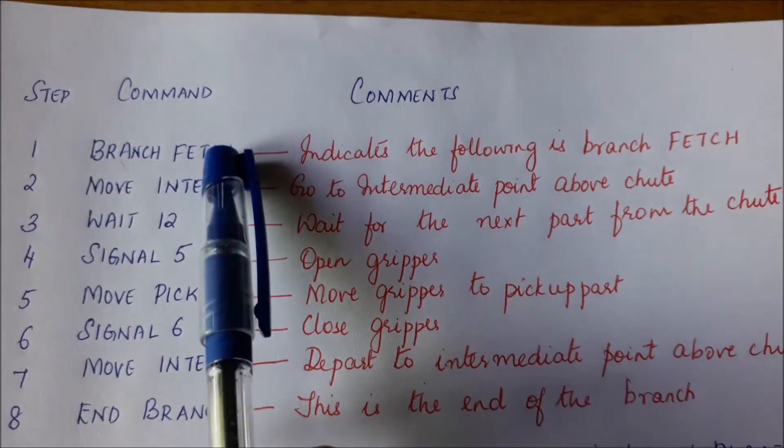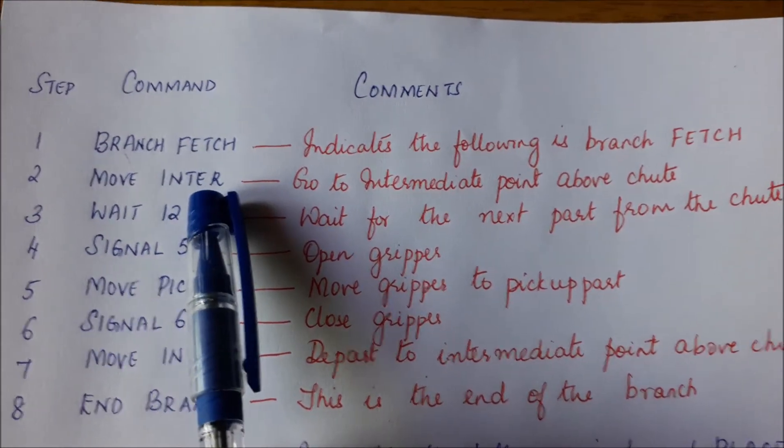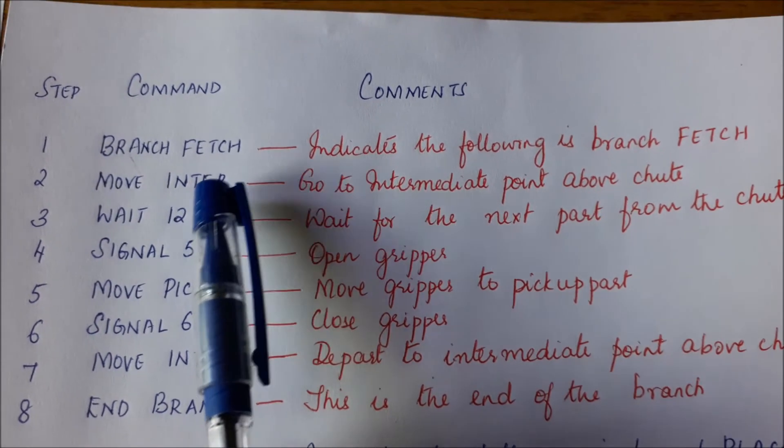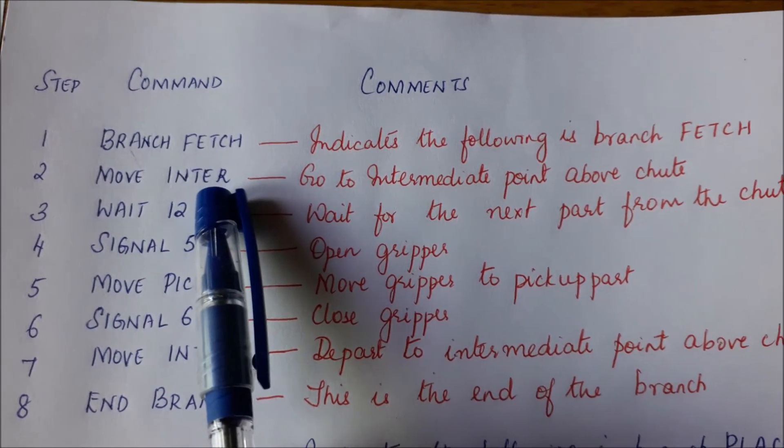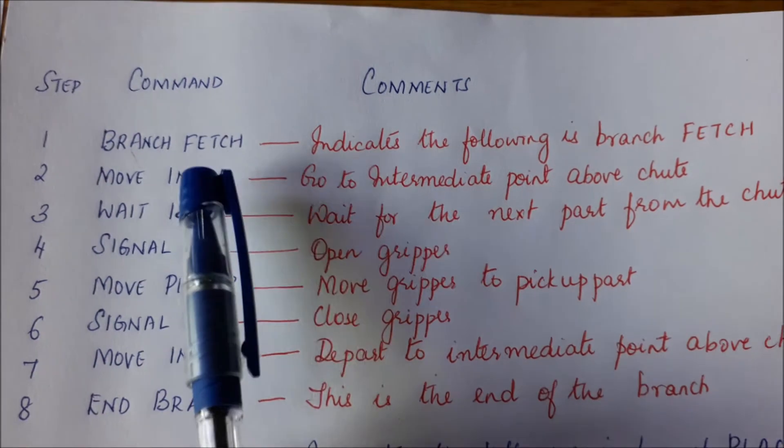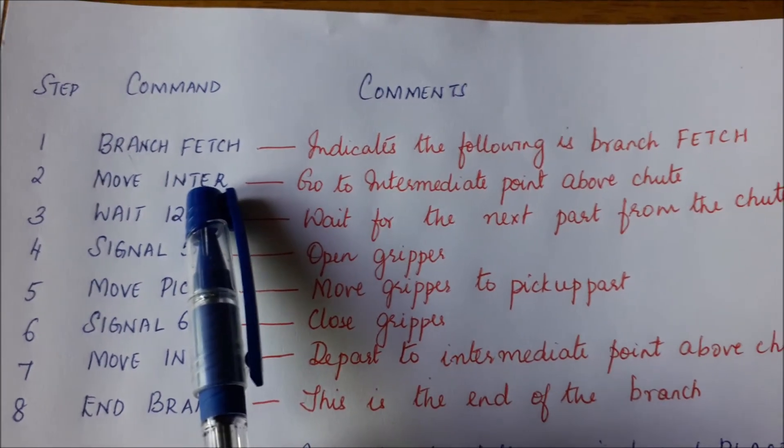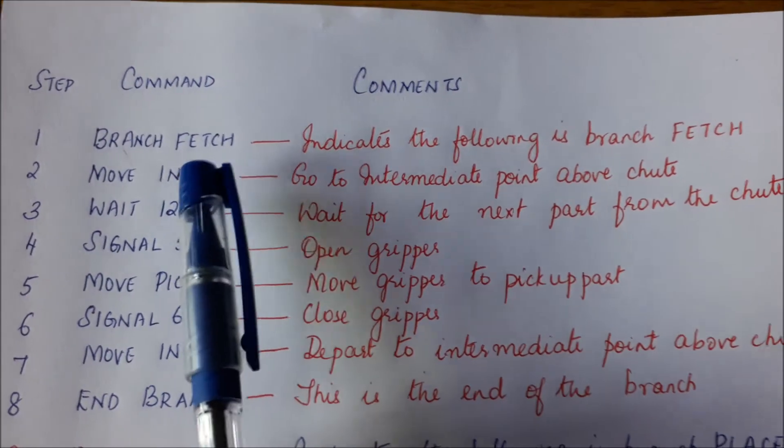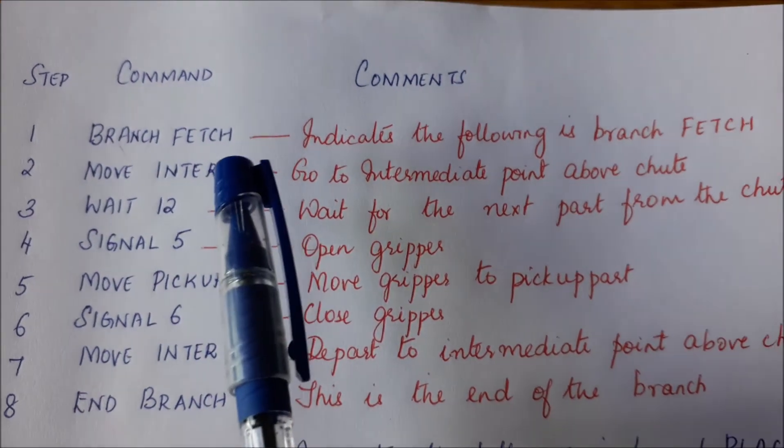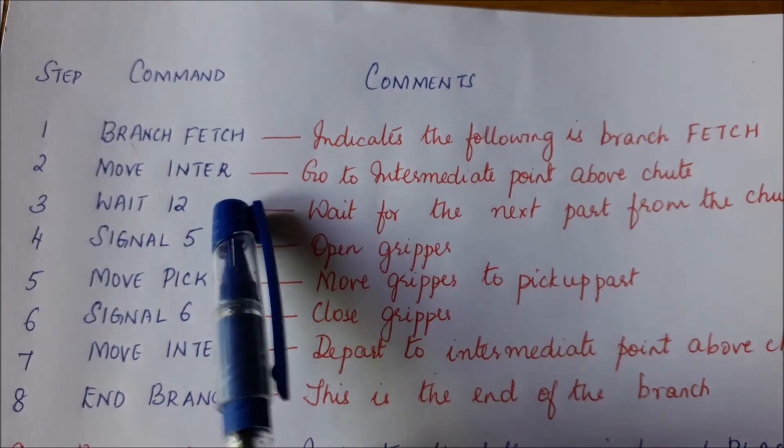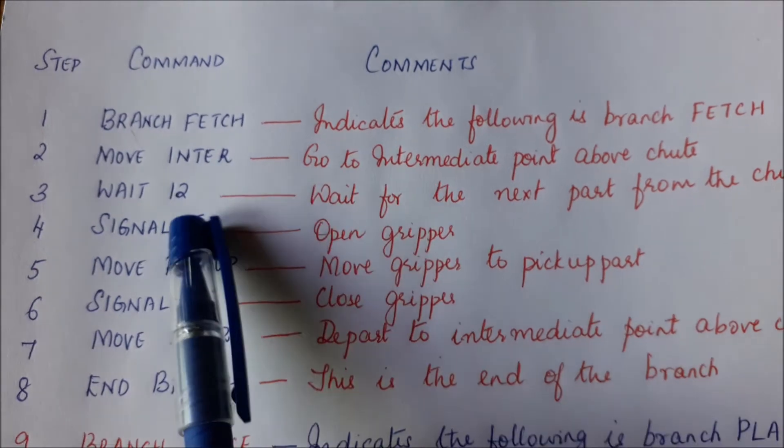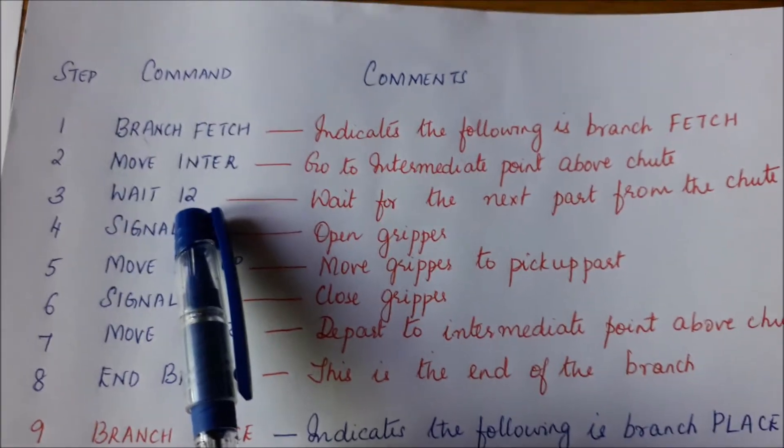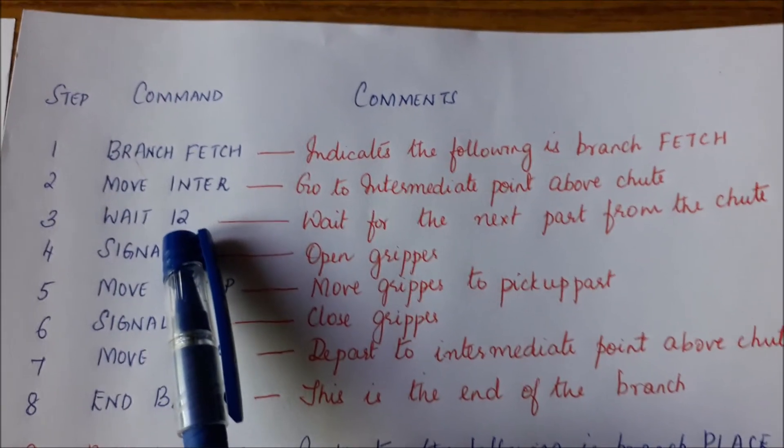So in the fetch operation what happens is, now our robot is at the safe position. So we move our robot to an intermediate point above the shoot. So the robot is moved from its safe position to an intermediate point above the shoot. So you cannot go directly to the shoot and pick up the part. So you are going above the shoot and waiting at an intermediate point. Moving there and you are waiting for a signal at input 12.